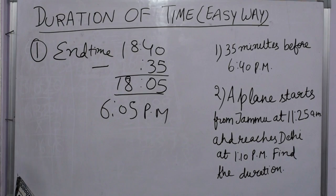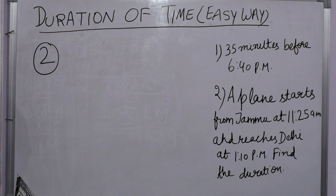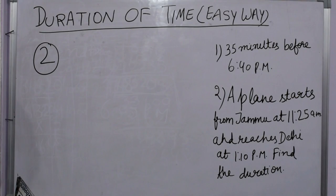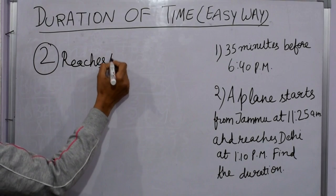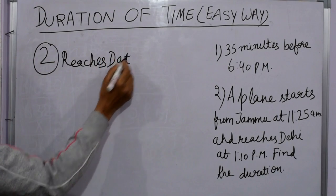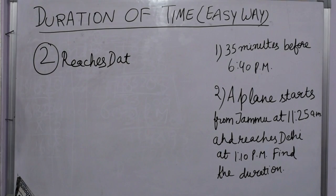The second sum: a plane starts from Jammu at 11:25 AM and reaches Delhi at 1:10 PM. In this sum we have starting time and ending time — we have to find only the duration. Convert each and every time into 24-hour clock. Delhi arrival at 1:10 PM converts to 13:10.